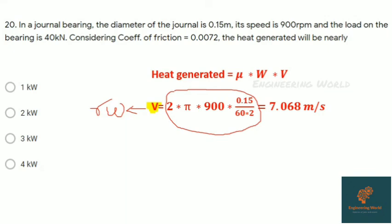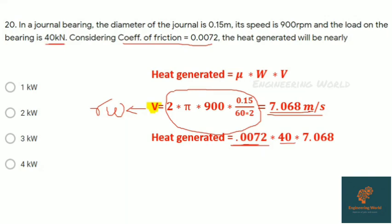By putting values, we get V equals 7.06 m/s. For heat generated, just put all the values: μ is given, W is given, we found V. We get 2.03, that is 2 kW.